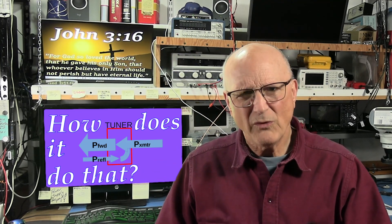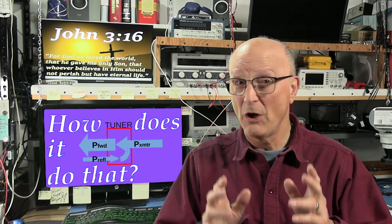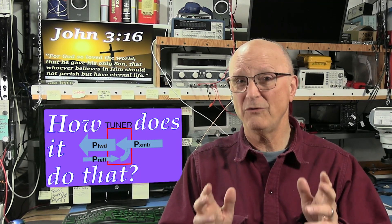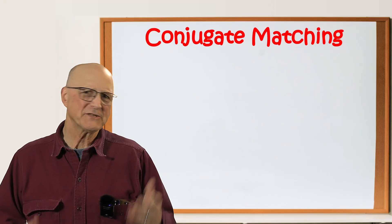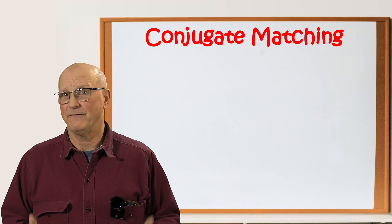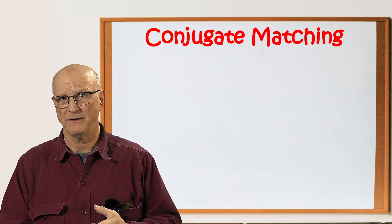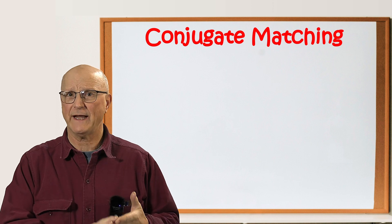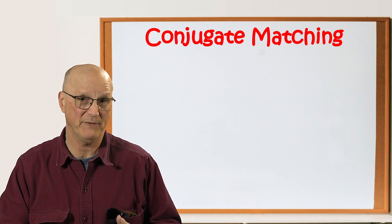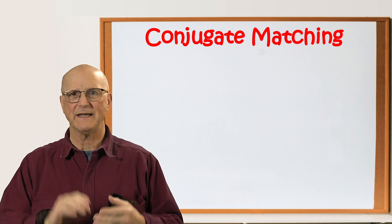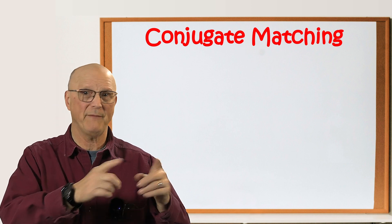So to begin with, we have to remind ourselves of some foundational basics, which will likely be review for many, but stay with me. Let's remember the playing field we're on. When we talk about conjugate matching, we're saying that the reactive or imaginary portion of the impedance of the matching impedance has the opposite sign from the impedance to be matched.